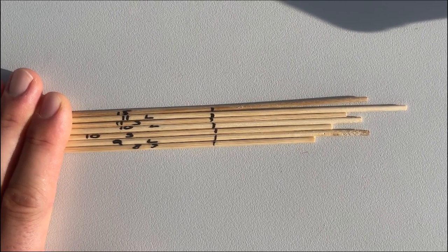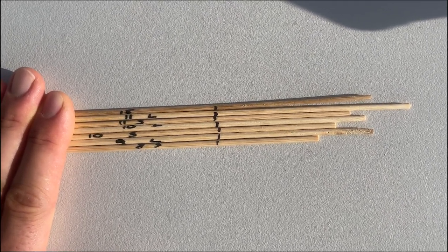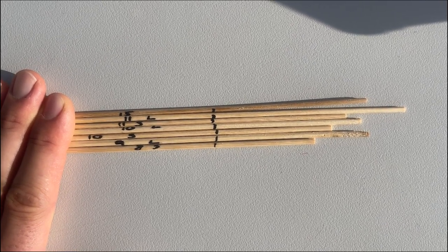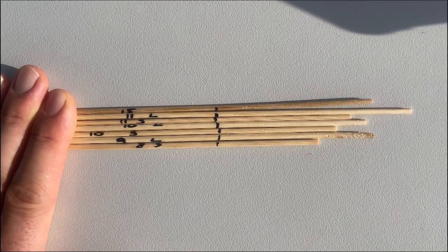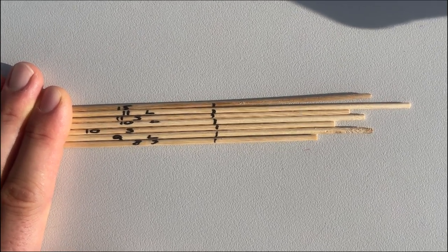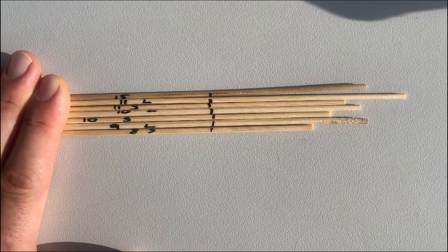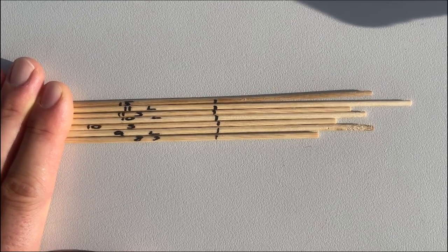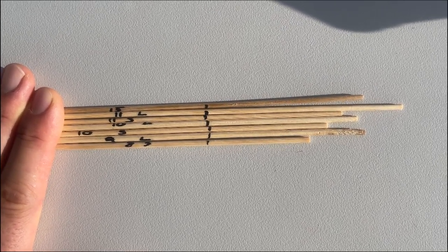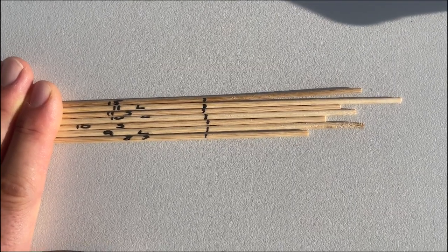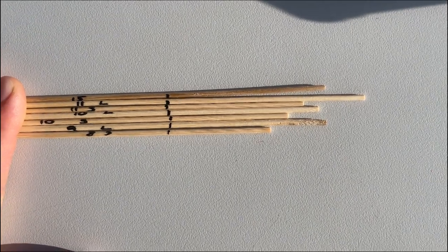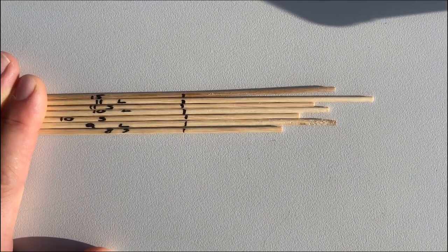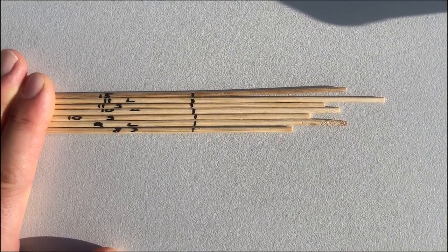So to take the measurements I poked a skewer down the channel that the shot passed through until the skewer touched the ball, then I marked it off with a vivid. And here you can see right at the top there we have the largest ammo, and then we've got 11mm lead, 11mm steel, 10mm lead, 10mm steel, the 9mm lead and the 8mm steel.